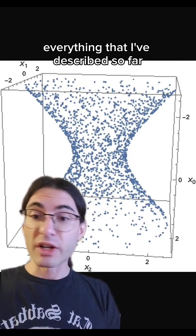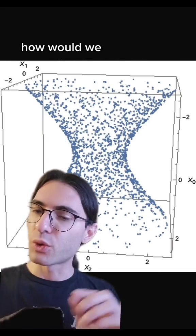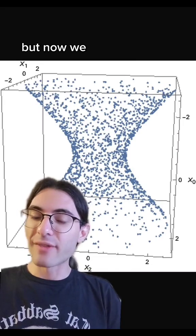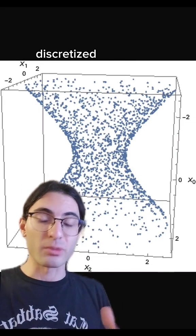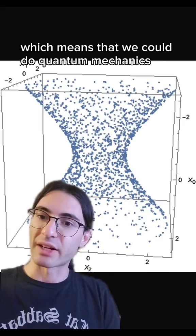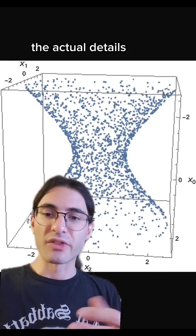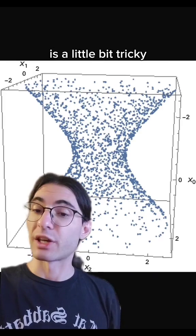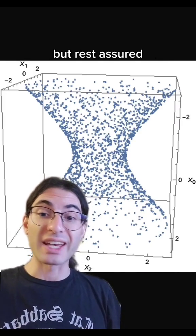But anyway, everything that I've described so far is purely classical. The question is how would we do quantum gravity here? But now we have a Lorentz invariant discretized spacetime, which means that we could do quantum mechanics to it. The actual details of the spacetime quantization is a little bit tricky and I'm not going to go into it, but rest assured it can be done.